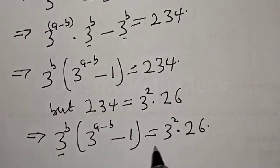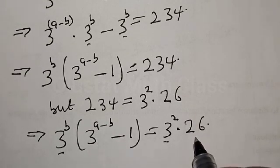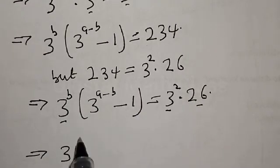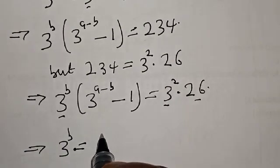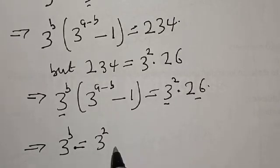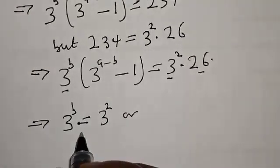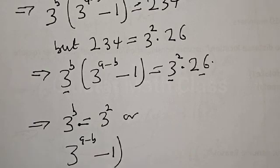So we have 3 to power b here and 3 squared here. And we have 3 to power a minus b minus 1 here, and 26 here. By comparison, we get 3 to power b equal to 3 squared, and 3 to power a minus b minus 1 equal to 26.